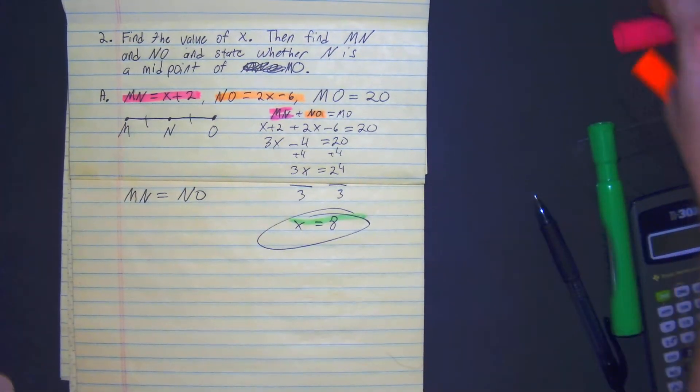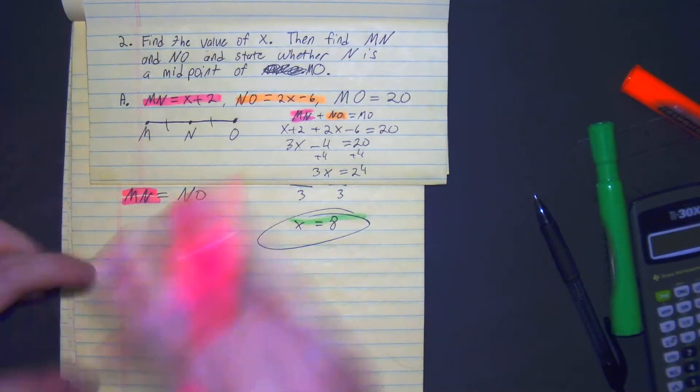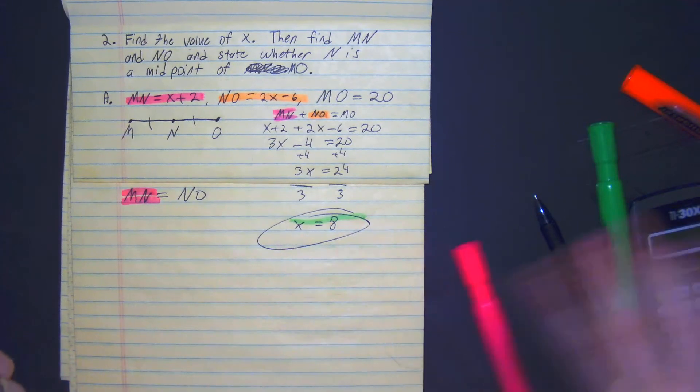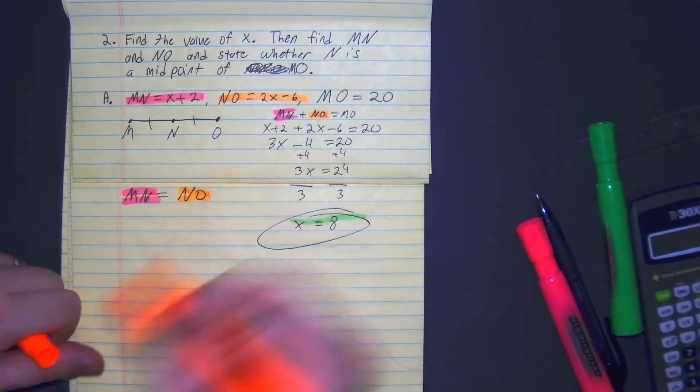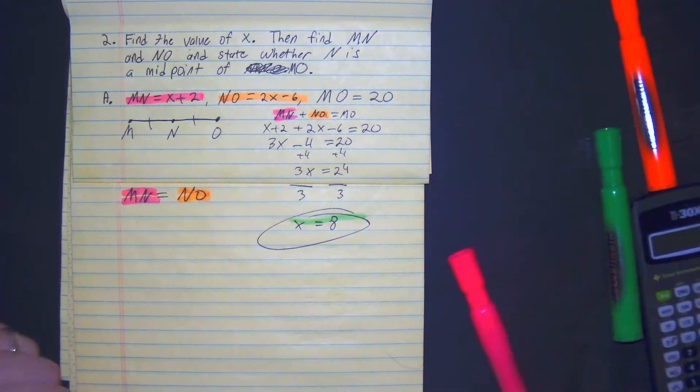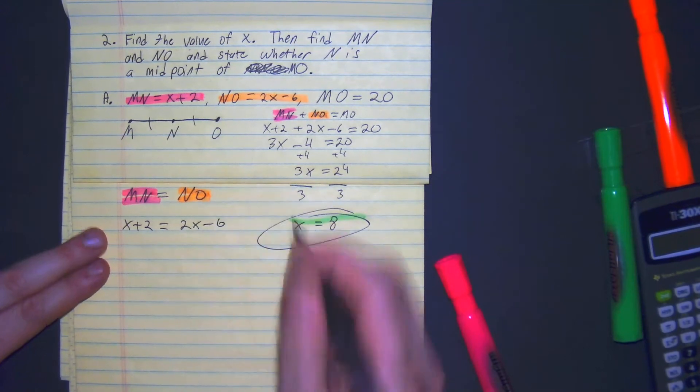If you're going to call MN this value, and then we have NO is this value, so I'm going to plug those numbers in. So we have x plus 2 equals 2x minus 6.